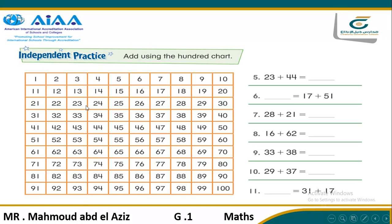We want to use the 100 chart to solve 23 plus 44. Where is 23? That's 23. Plus 44. What's the number in tens? It's 4. So we will go down 4 steps: 1, 2, 3, and 4. So we are now on 63. And the ones digit is 4, so we will go ahead 4 steps: 1, 2, 3, and 4. So our answer or sum is 67.